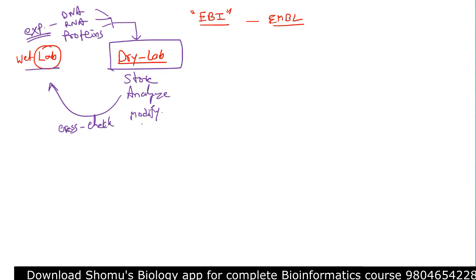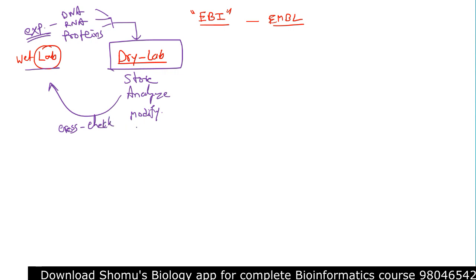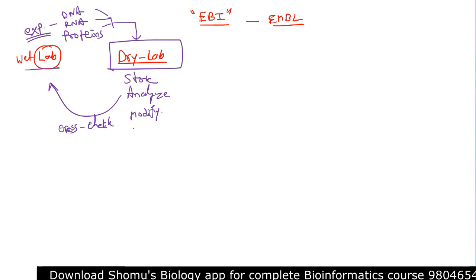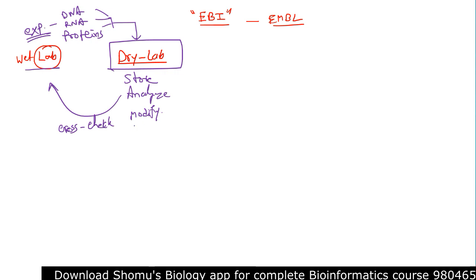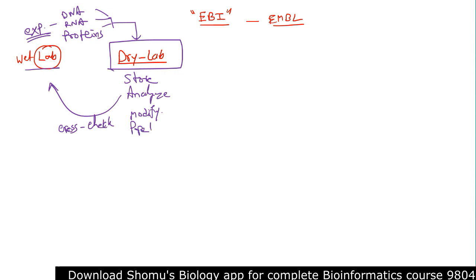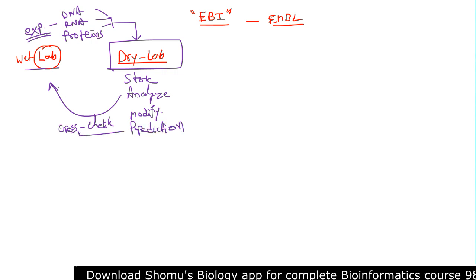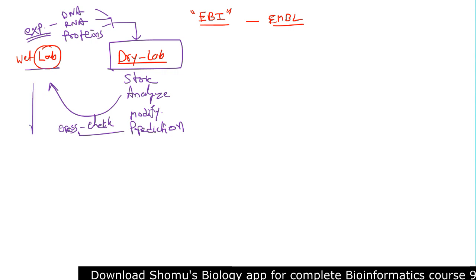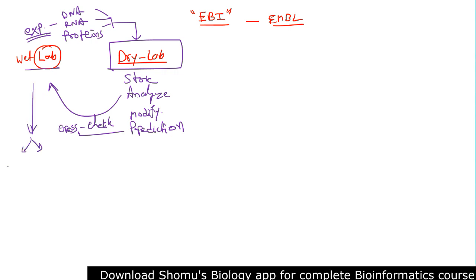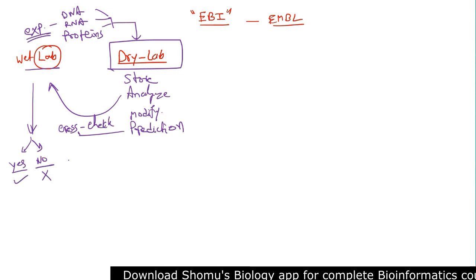After modification, after prediction, we cross-check that prediction. We do prediction in the dry lab and then cross-check it, and based on that we get a yes or a no — and based on that we can understand the organism.